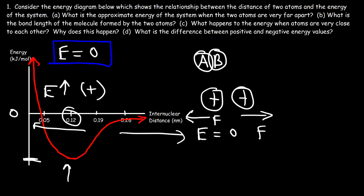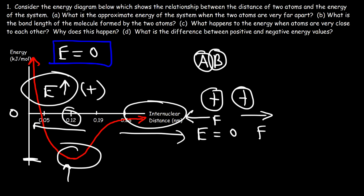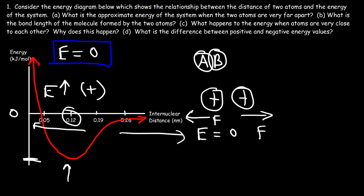If the atoms are too close, the energy is too high and no bond forms at that distance. If they're too far away, the energy is almost zero because they can't interact. But at the right distance they can form a bond — that is the bond length of the molecule, where the energy is the lowest. In the region where atoms are too close, the energy is positive; in the region where they attract, it's negative.